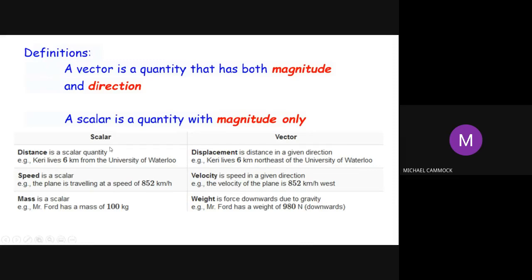Just to make sure we understand the difference between a scalar and a vector, I have a couple of examples. On the left-hand side there are some scalar quantities. Distance is a scalar — if I tell you something is 6 kilometers away with no indication of direction, that's a scalar. Speed is also scalar; if a plane is traveling at 852 kilometers per hour with no direction mentioned, that's a scalar quantity.